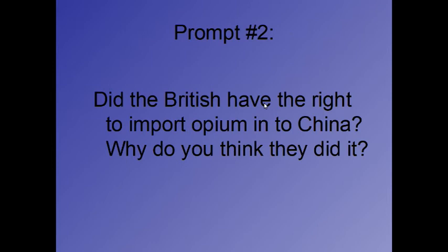This brings us to prompt number two: Did the British have the right to import opium into China, and why do you think they did it — beyond wanting to trade for tea? Think about what we've learned about British colonialism, Cecil Rhodes, and what happened in Africa. Pause here and write at least a paragraph.